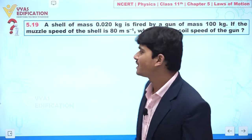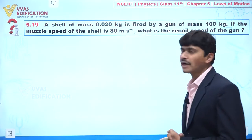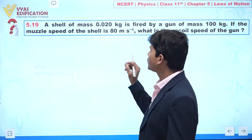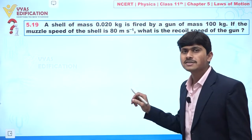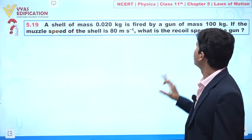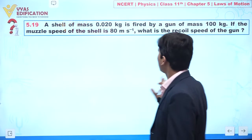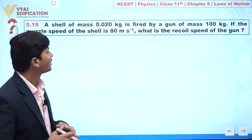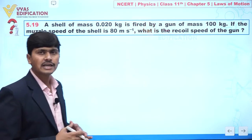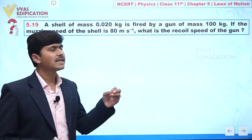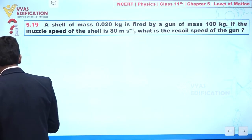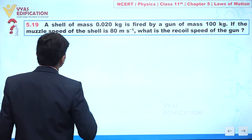We are going to discuss question number 5.19. In this question, a shell of mass 0.02 kilogram is fired by a gun of mass 100 kilogram. If the muzzle speed of the shell is 80 meters per second, what is the recoil speed of the gun?